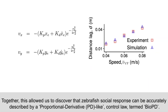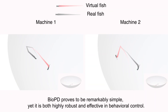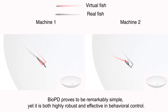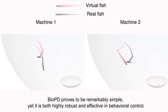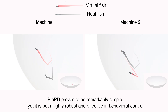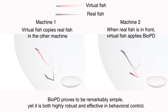Together, this allowed us to discover that zebrafish social response can be accurately described by a proportional derivative-like control law, termed BioPD. BioPD proves to be remarkably simple, yet it is both highly robust and effective in behavioral control.